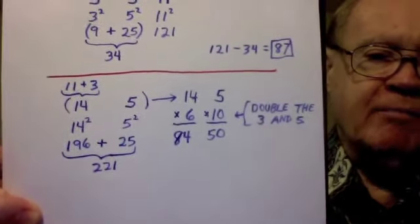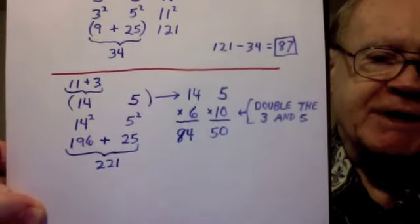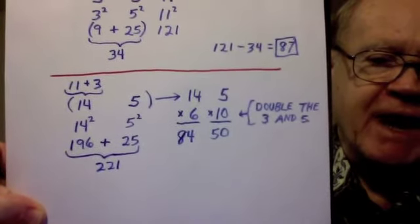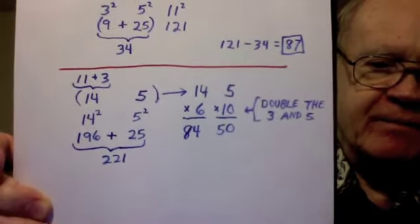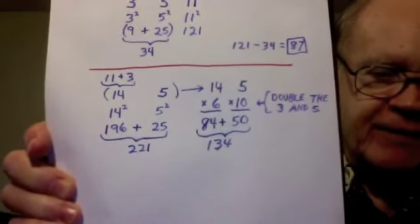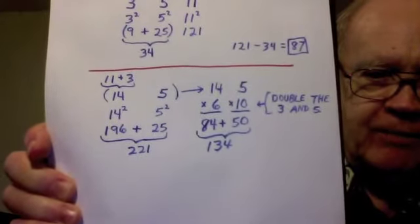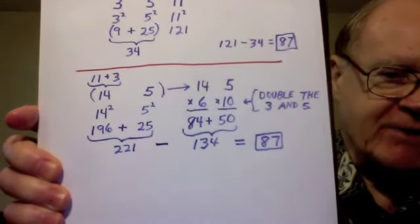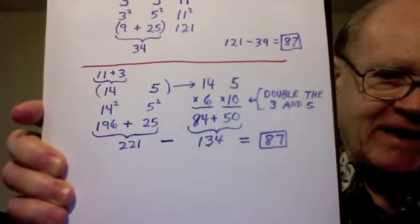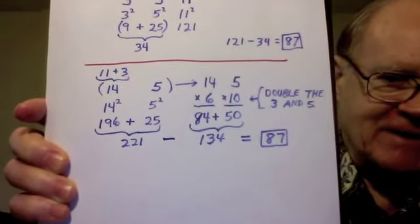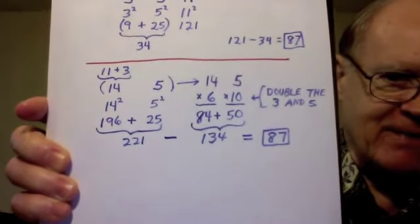I then multiply the 14 times the 6, and the 5 times the 10, which gives me 84 and 50. I add the 84 and 50, and I get 134. I then subtract 221 minus 134, and I get 87 again. That's the same number I got by the first method.